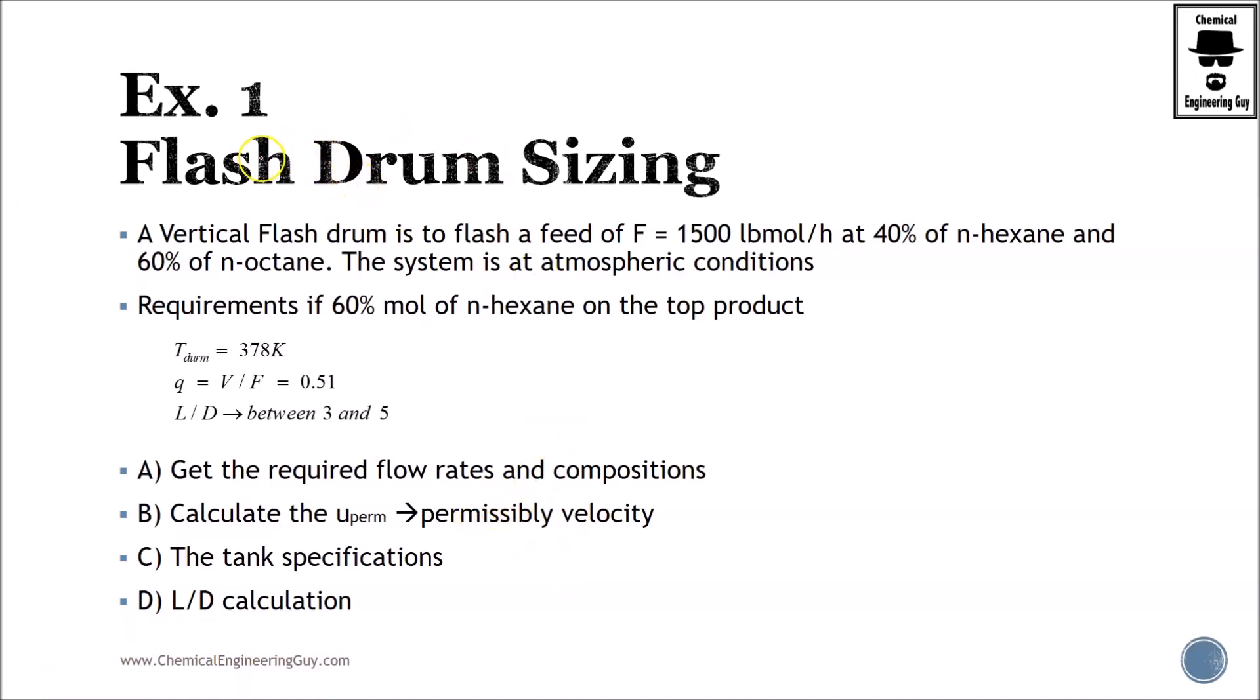Let's do exercise number one for flash drum sizing. We're going to be sizing a vertical flash drum, or at least let's hope the L/D ratio gives us a vertical flash drum. We're flashing a feed of 1,500 pound mole per hour which contains 40% n-hexane and 60% n-octane, which is C8.